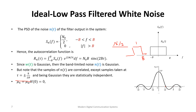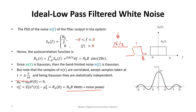Since the mean of the input is zero, the mean at the output is also zero. The variance is the expected value of n²(t) minus the mean squared. Since the mean is zero, the variance equals the power, which is N₀·B. So although we started with white noise of infinite power, filtering produces a finite output power of N₀·B — equal to the area under the output PSD.